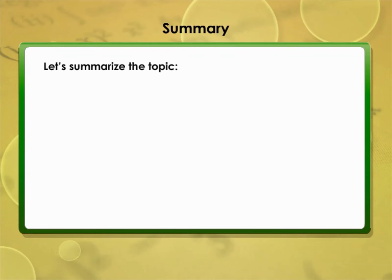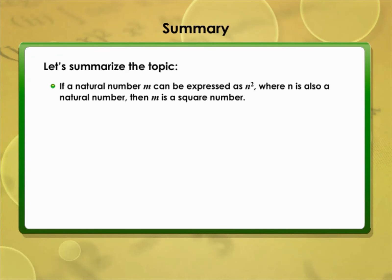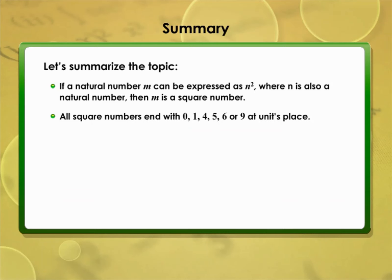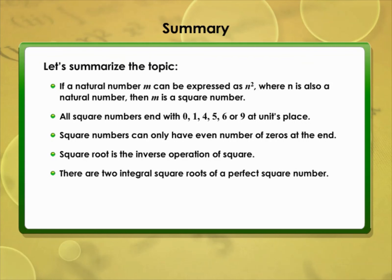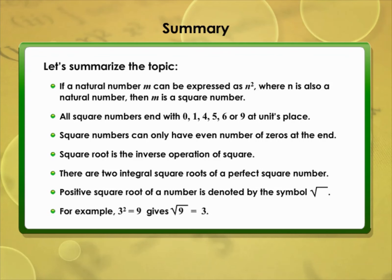Summary: if a natural number m can be expressed as n², where n is also a natural number, then m is a square number. All square numbers end with 0, 1, 4, 5, 6, or 9 in the unit's place, and square numbers can only have an even number of zeros at the end. Square root is the inverse operation of square; for example, 3² = 9 and √9 = 3.